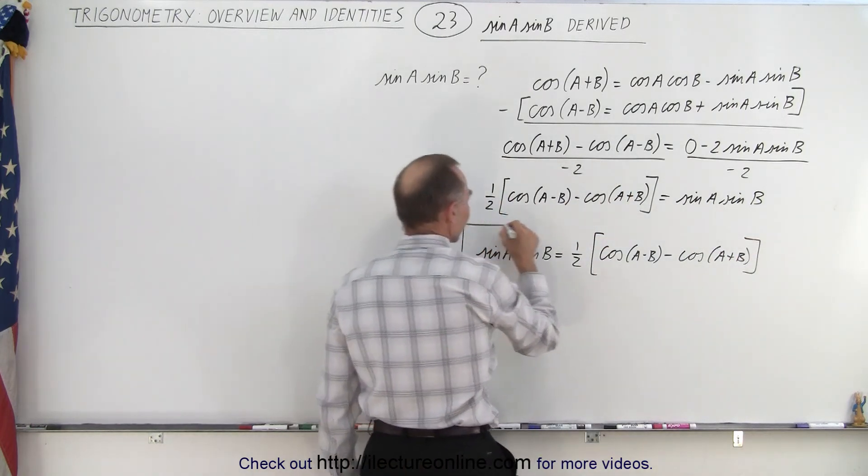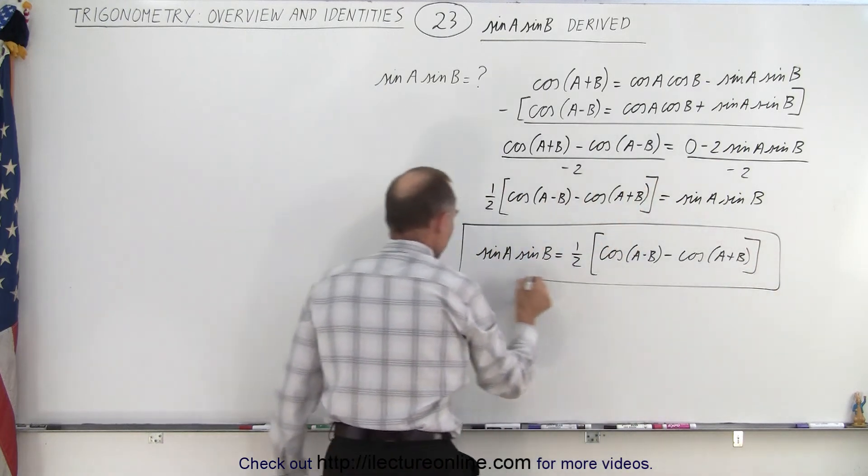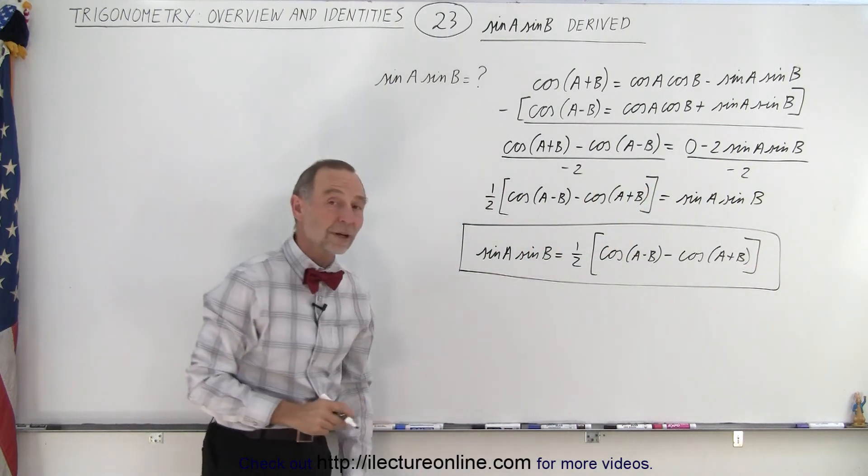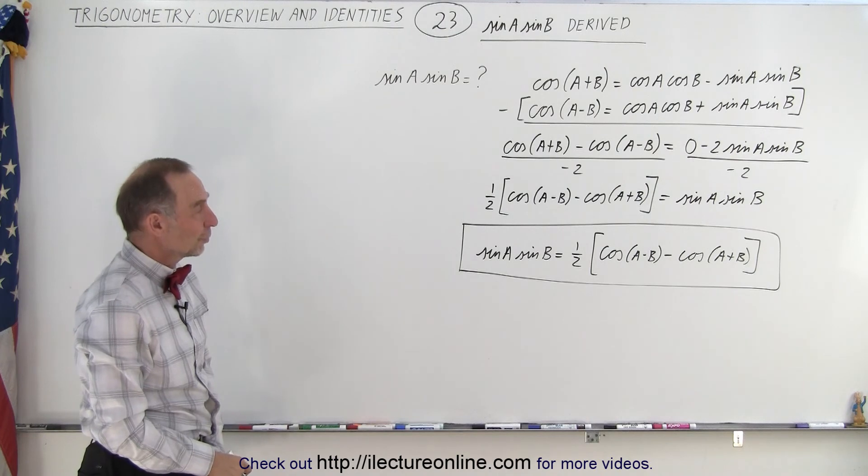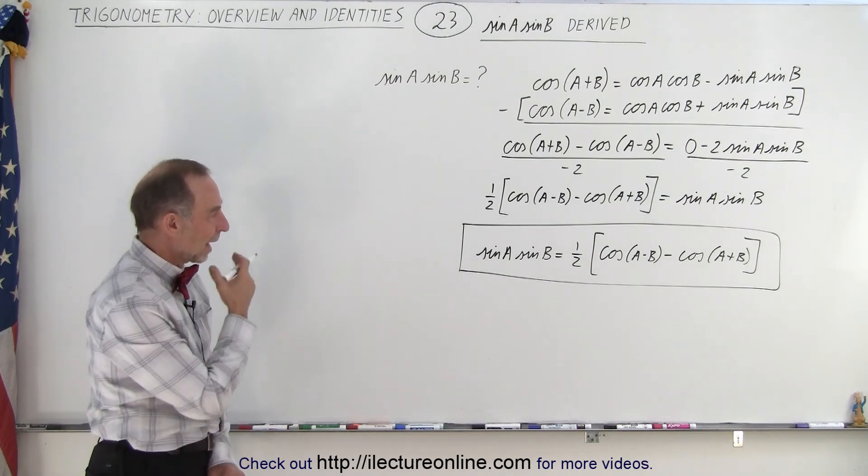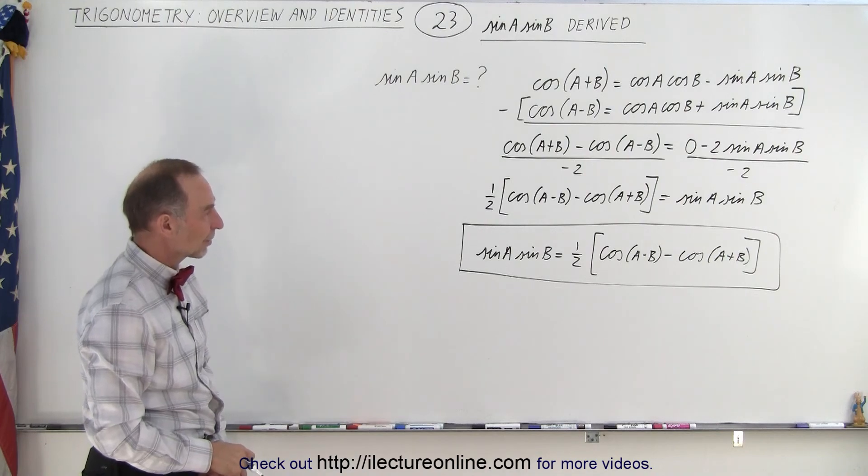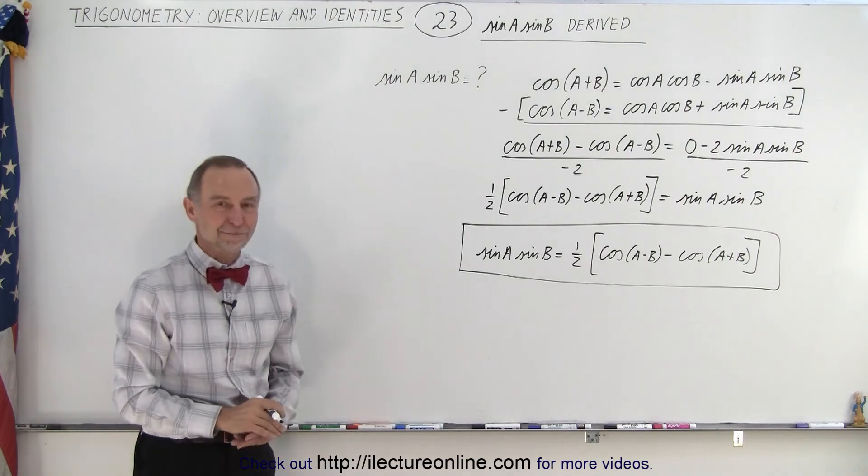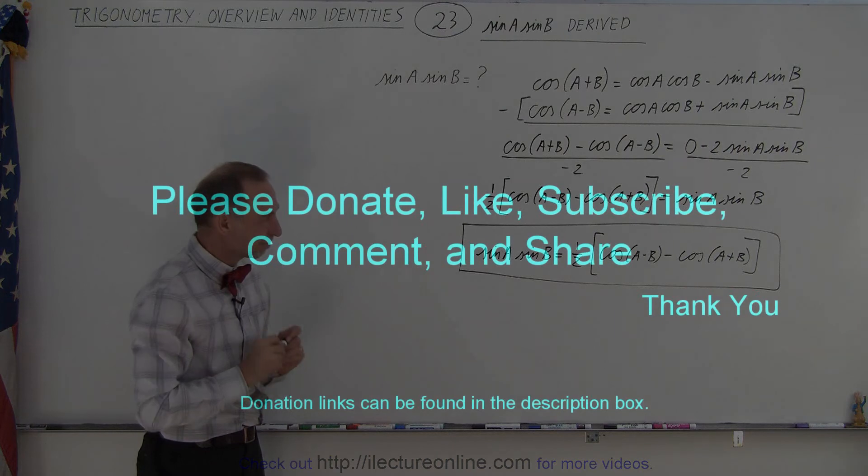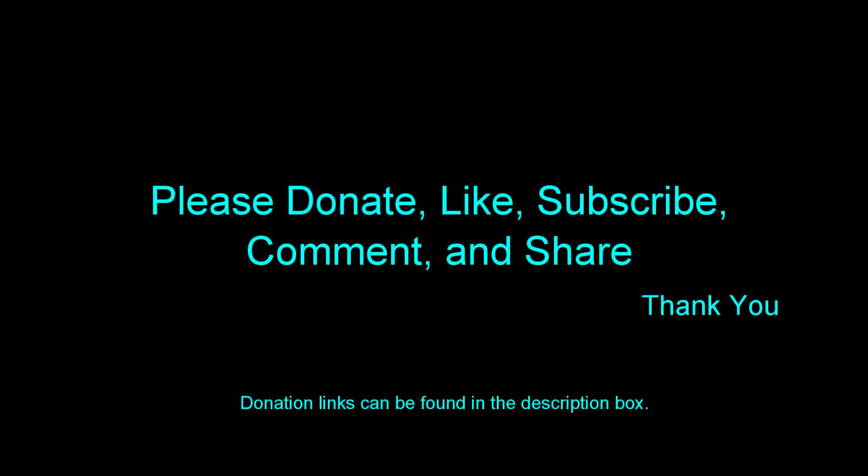And that is a very handy identity that is used quite often in the sciences, so it's good to know where that came from and how to derive the product of the two sines, sine of a and sine of b. And that is how it's done. All right, thank you very much.